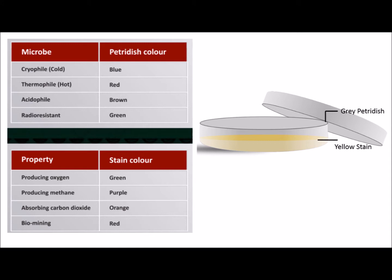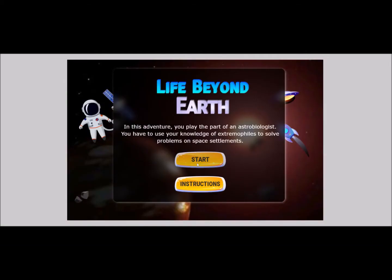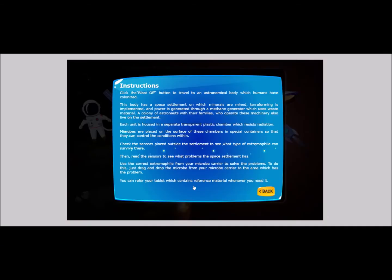The conditions at which the extremophiles can survive is indicated by the color of the petri dish. The property of the extremophile is indicated by the color of the stain.